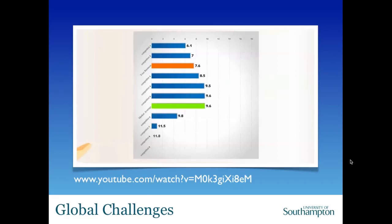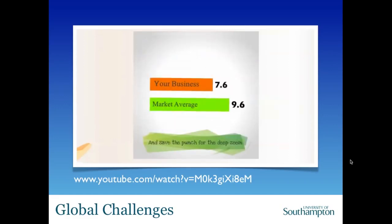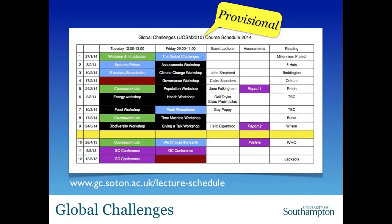So those are the assessments, and this is the schedule — in as garish a colour scheme as I could imagine. This is my opening gambit of when I think we should do the assessments: report one here, report two here, the posters come here, and then the presentations come at the end of term. This yellow bar is Easter. I've got report one scheduled for the end of week five. There's a constant balance between knowing what you'll be assessed on and incorporating that learning as soon as possible. Here we are today for the welcome introduction. On Friday I'm going to give a lecture and then do a bit of a workshop activity going into depth about the global challenges.